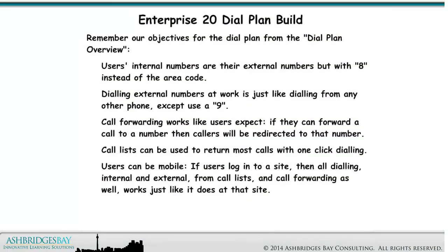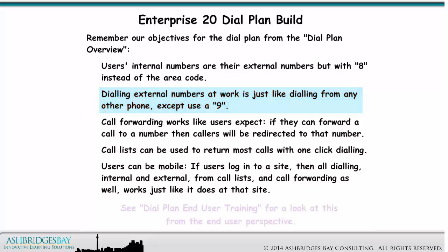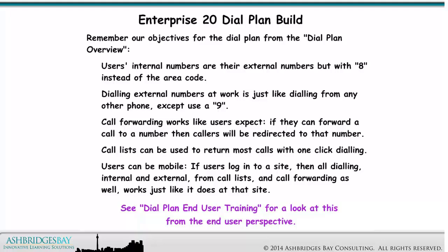Remember our objectives for the Dial Plan from the discussion in Dial Plan Overview. In this drawing, we focus on the second objective: dialing external numbers at work is just like dialing from any other phone, except use a 9. See Dial Plan End User Training for a look at this from the end user perspective.